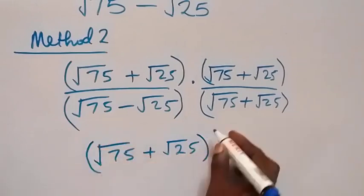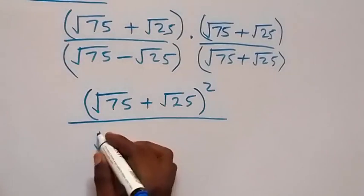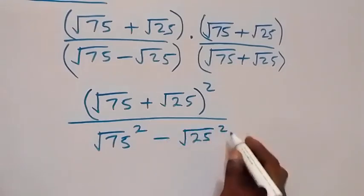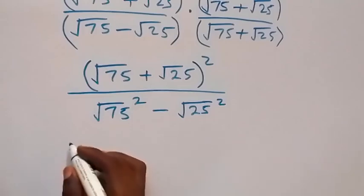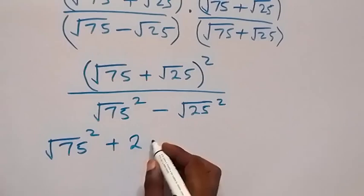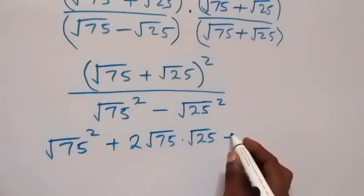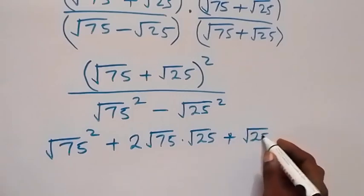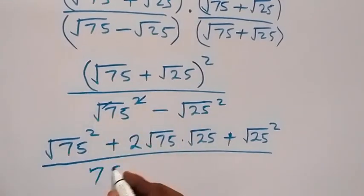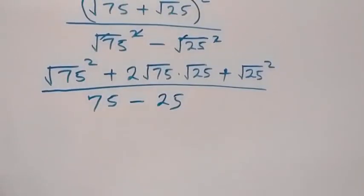The numerator becomes root 75 plus root 25, all squared. The denominator follows the difference of squares form: root 75 squared minus root 25 squared. Expanding the numerator gives root 75 squared plus 2 times root 75 times root 25 plus root 25 squared, divided by 75 minus 25, where squares cancel the square roots.